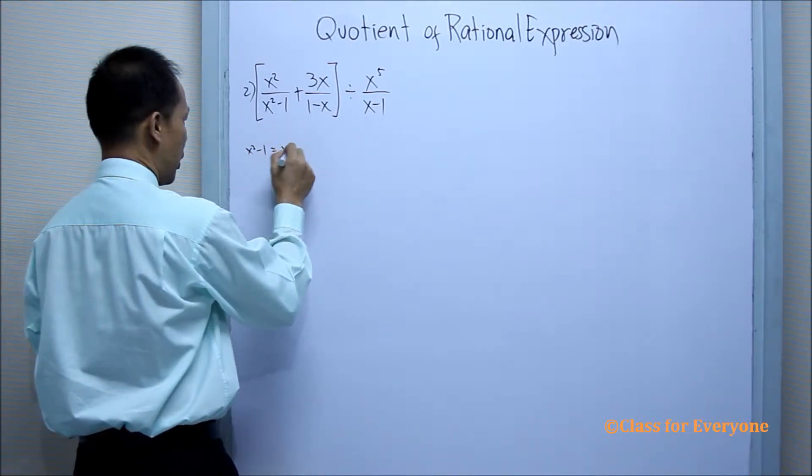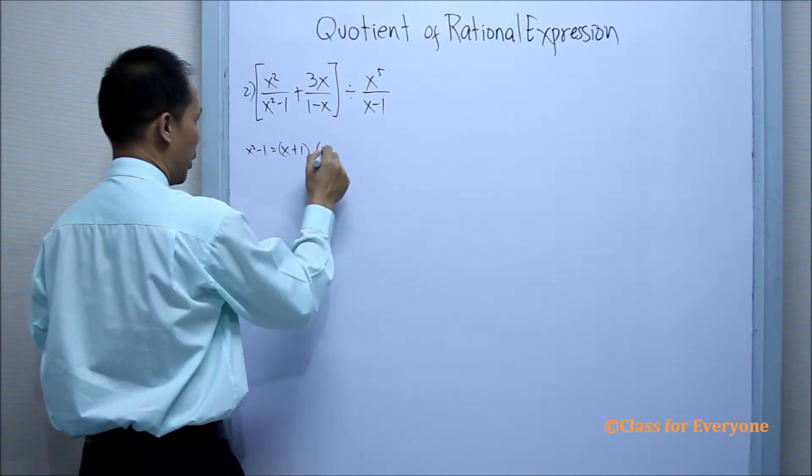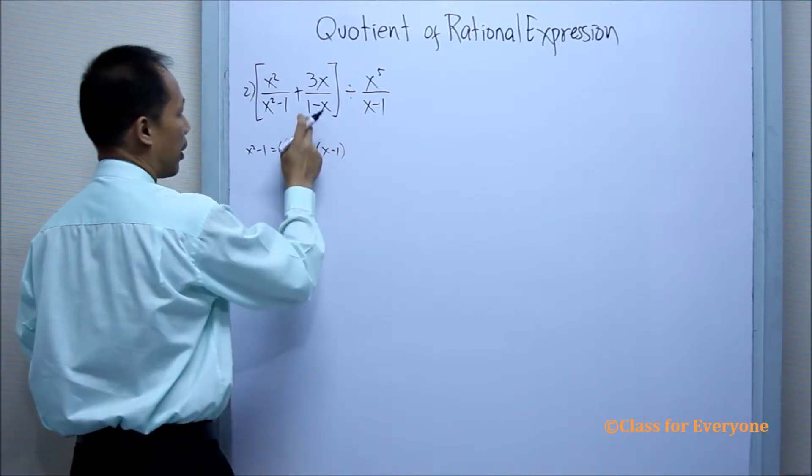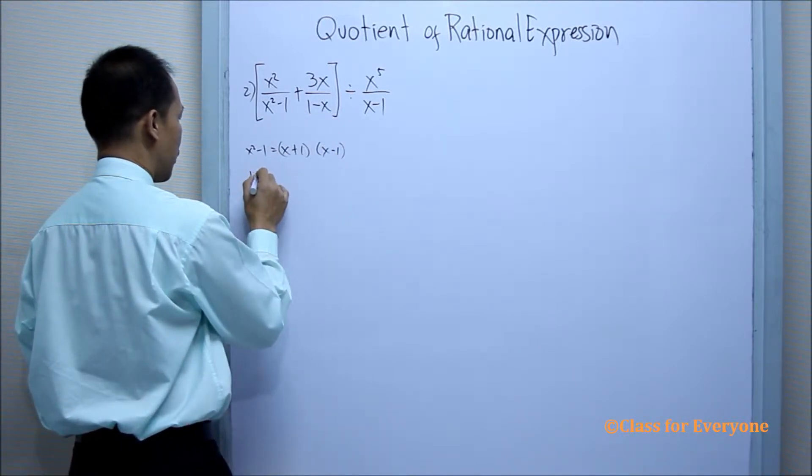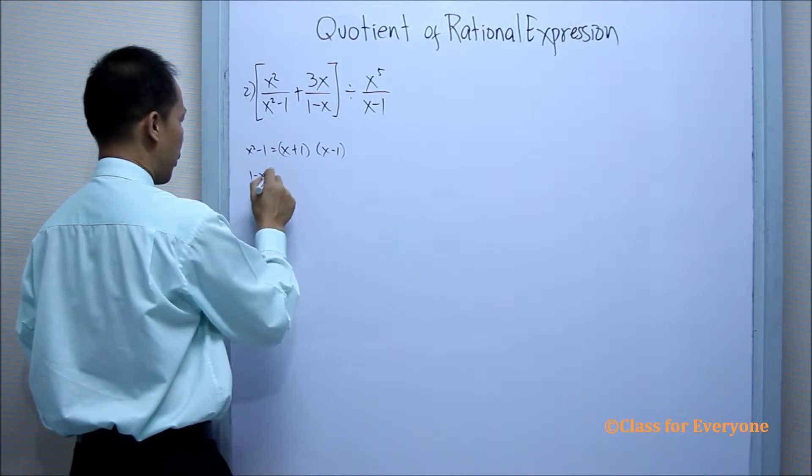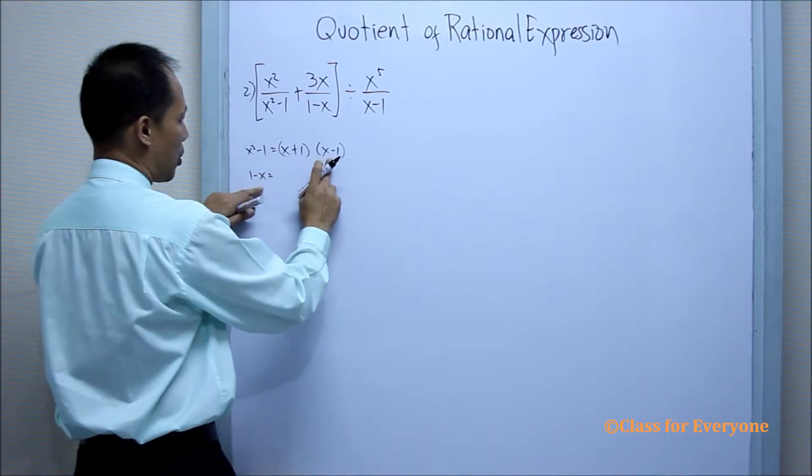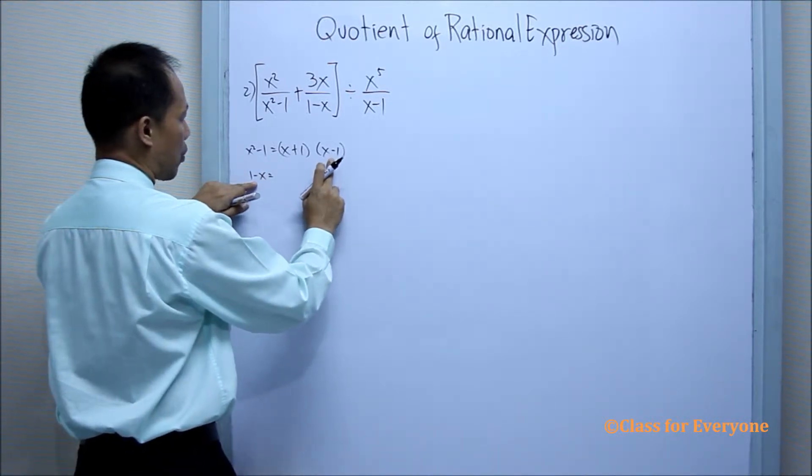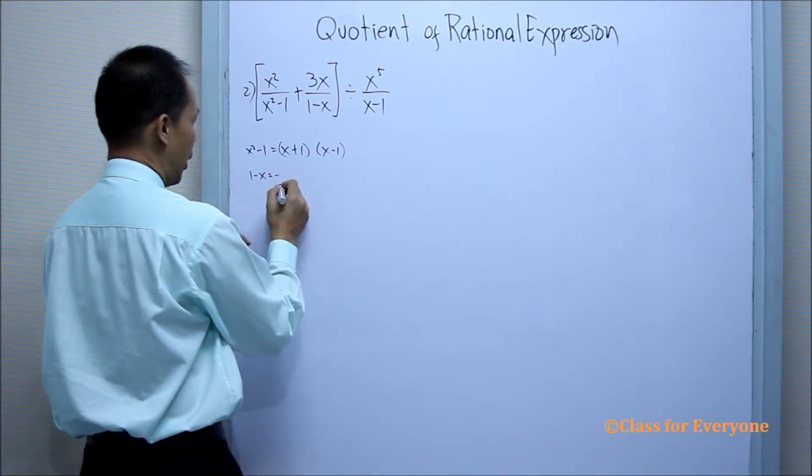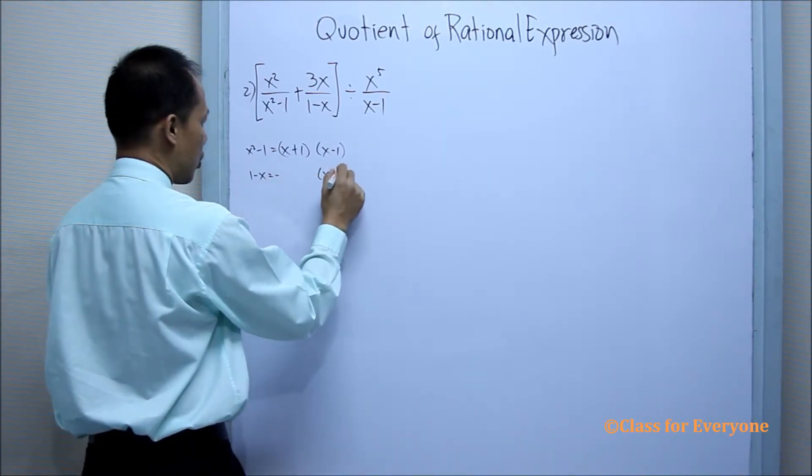x squared minus 1 equals x plus 1 and x minus 1. And then factoring this 1 minus x, it is the opposite of x minus 1. So we'll just have a negative and then x minus 1.